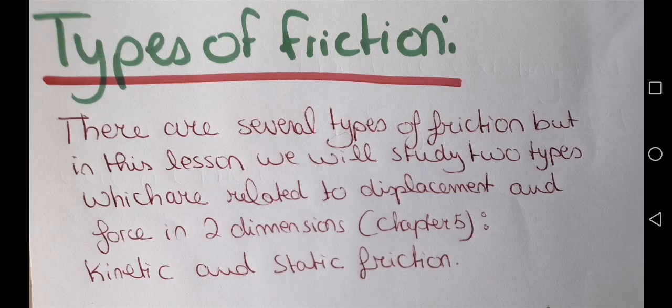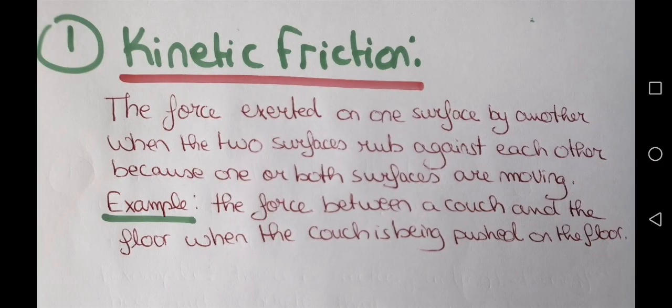Types of friction. There are several types of friction. First, kinetic friction is the force exerted on one surface by another when the two surfaces rub against each other because one or both surfaces are moving. For example, the force between a couch and the floor when the couch is being pushed. Whenever there is motion, the friction is kinetic friction.